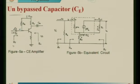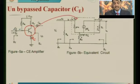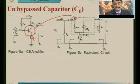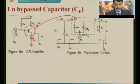Next, let us consider the common emitter amplifier with an unbypassed capacitor. If you remove the capacitor, then the resistance Re comes into the picture. Once again, you have to identify the base, emitter, and collector of the transistor, then transfer into this block with base, emitter, collector. Transfer the other components Rb, Rc, and Re from the wiring circuits. When Vcc is grounded, there is a resistance between the emitter and ground.